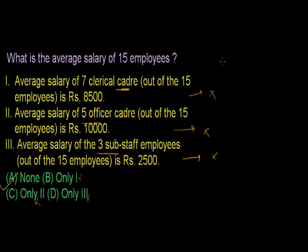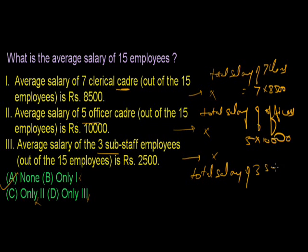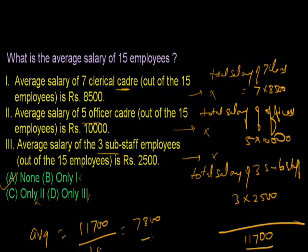All three statements are required to answer. Using statement 1: total salary of 7 clerks is 7 × 8,500. Statement 2: total salary of 5 officers is 5 × 10,000. Statement 3: total salary of 3 sub-staff is 3 × 10,000. Totaling these gives a combined salary of 1,17,000. The average salary is then 1,17,000 divided by 15 employees. I need each and every statement here to get the answer, so the answer is none can be dispensed — all three are required.